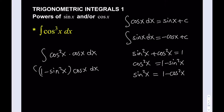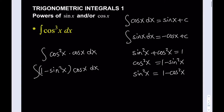At this point, do not distribute — you can, but I like to keep it this way. We're going to use u-substitution. Our cosine x dx is going to be du. Therefore, u will be sine x, and du would be cosine x dx.